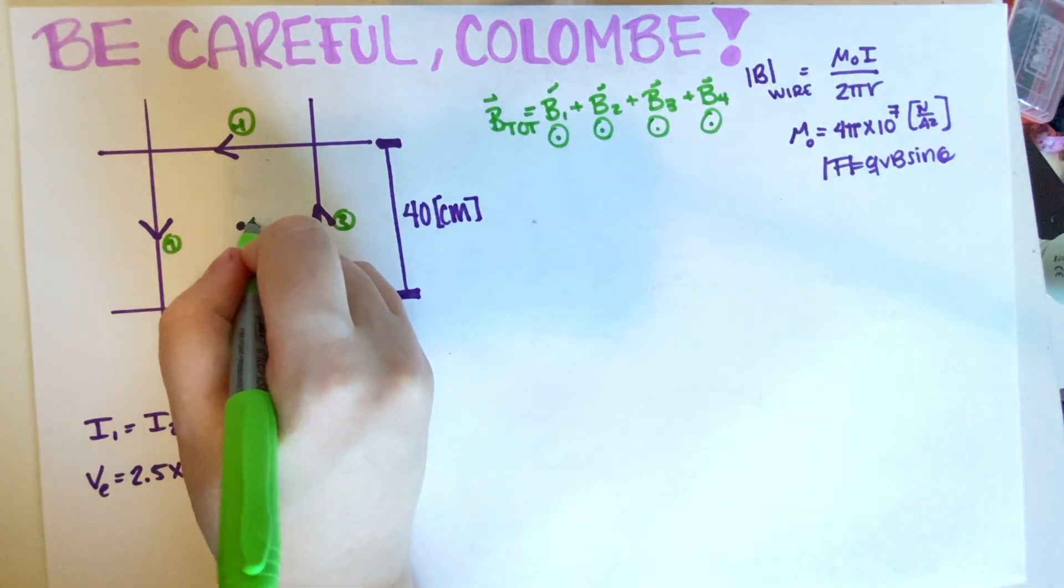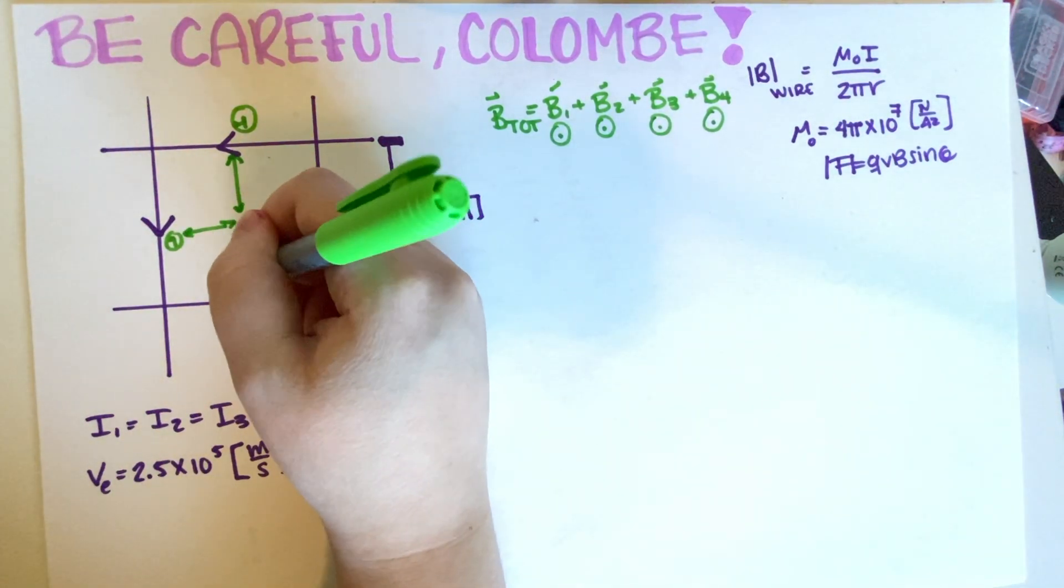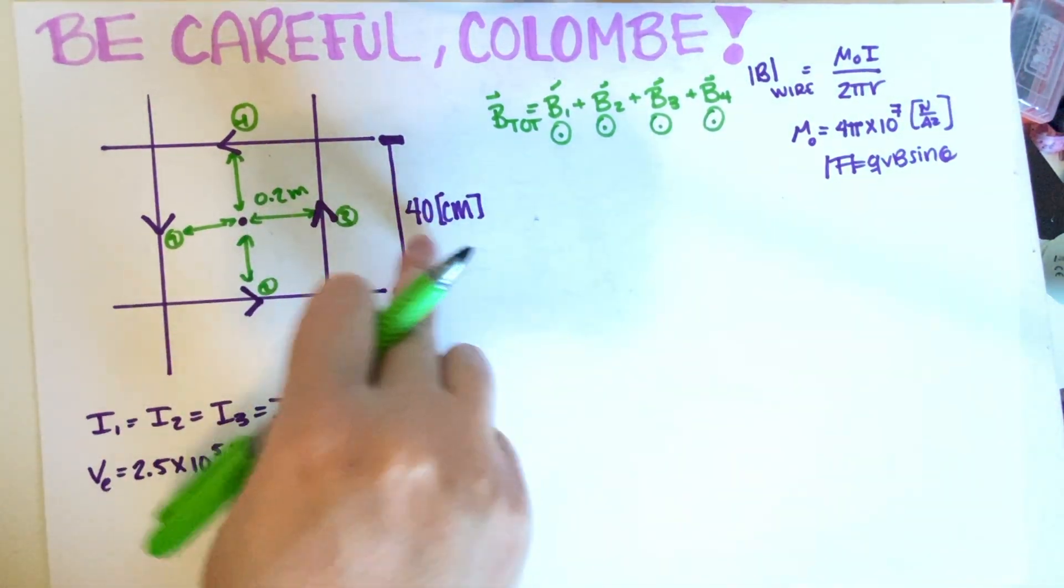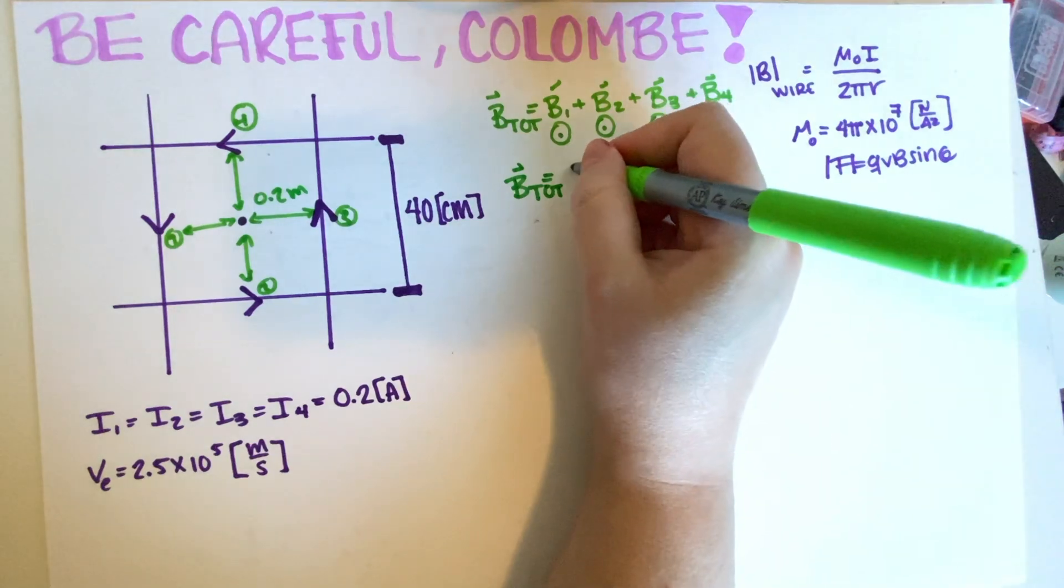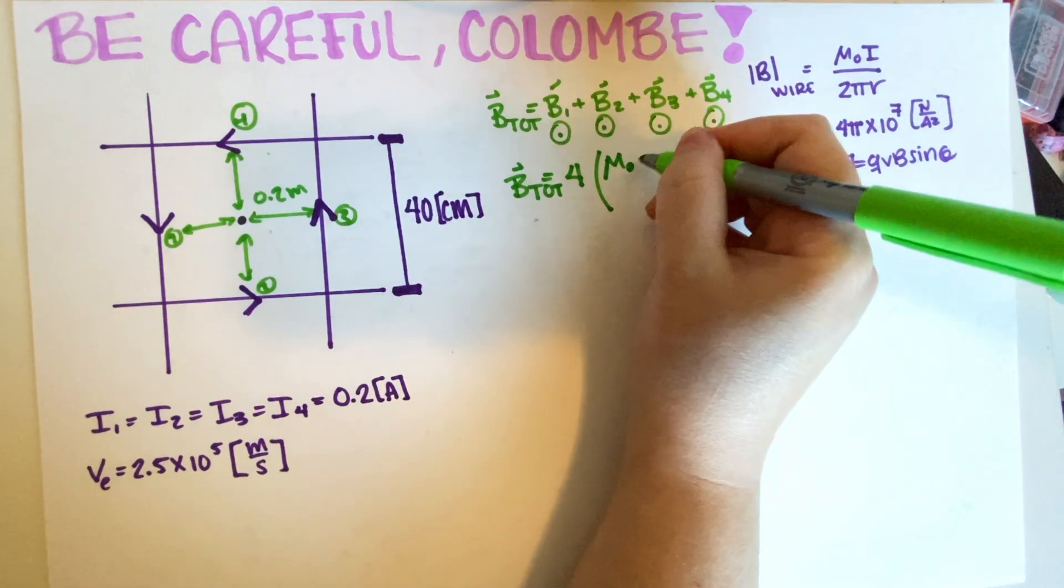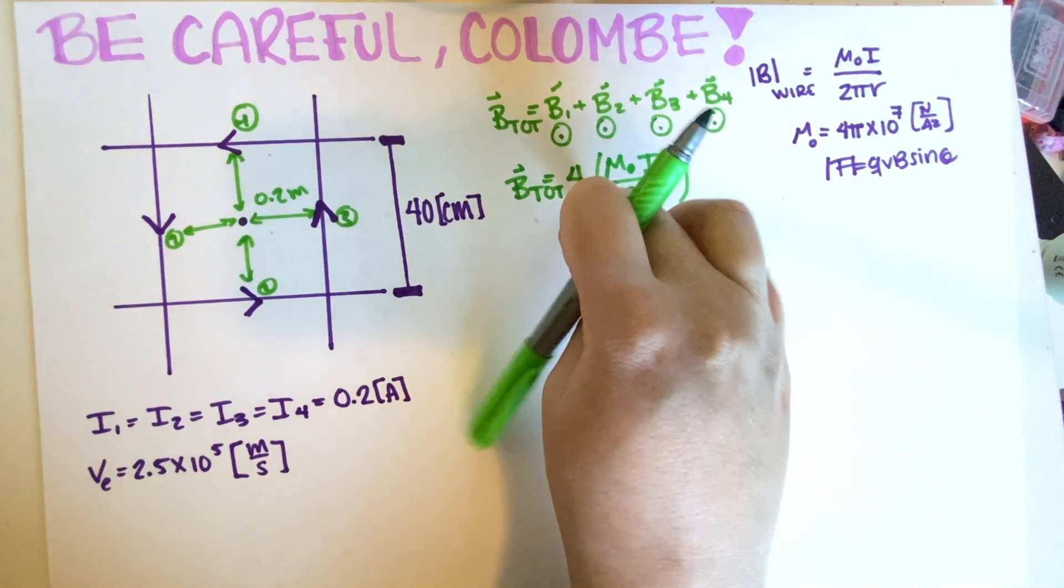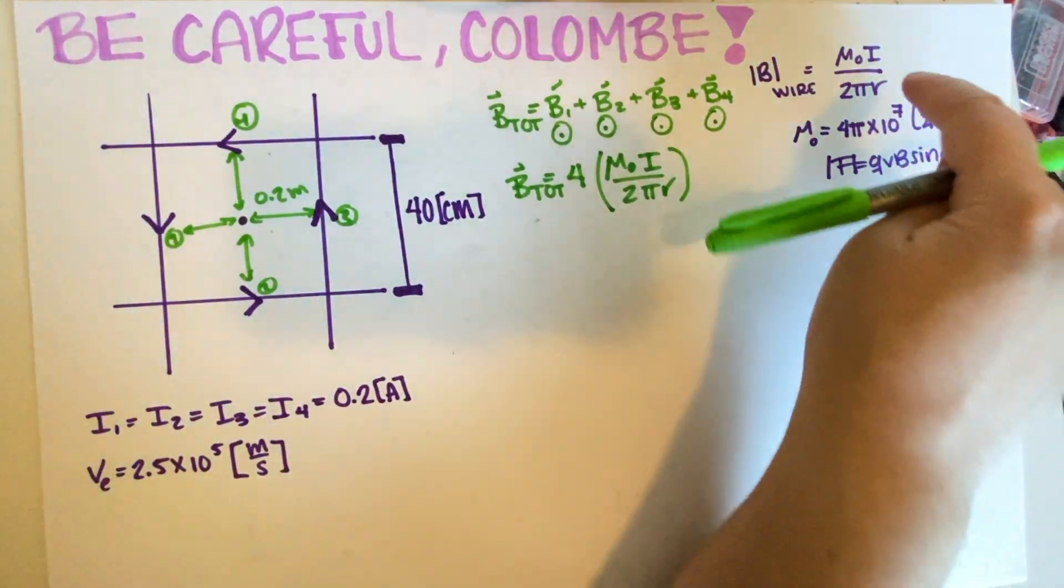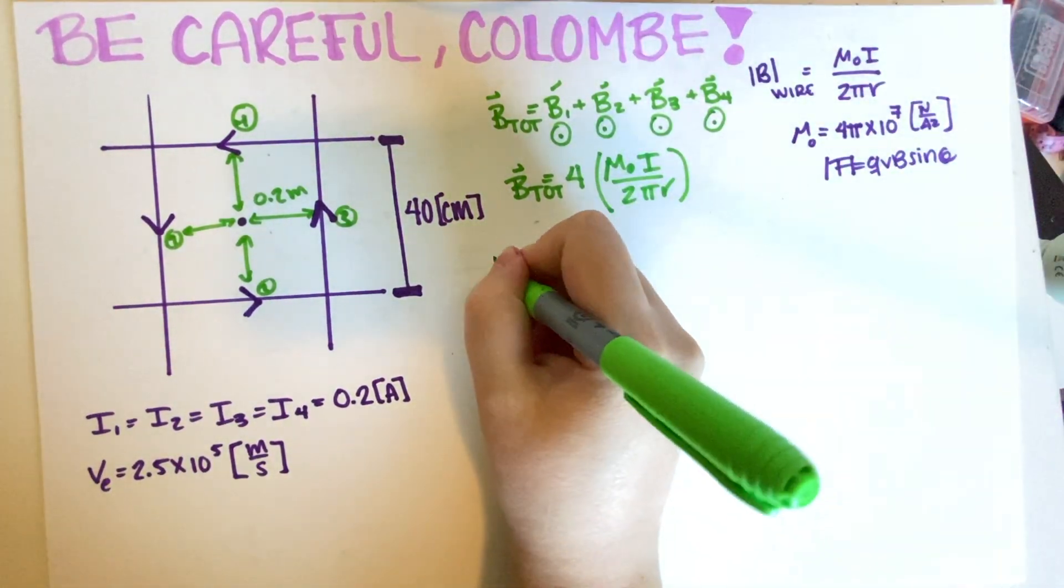All of them have the exact same distance, and that distance is half of the square diagonal. So 0.2 meters. So basically we can just add everything up. So it will just be four times because we have four wires, and then mu naught I divided by 2 pi R. Again, this is just because we have four wires. So I'm just putting everything together instead of doing one plus two plus three plus four. And then this is just me applying the definition. So now I just have to substitute this. So let's just go ahead and do that.